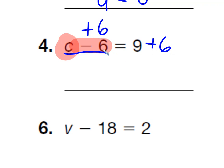So again, if we have take away 6 and plus 6, what does that do? It cancels it out. So now all we have left is the C. And I'll just move that down here. And on the right side, 9 plus 6, well that equals 15. And by checking it, we just say 15 take away 6. Does that equal 9? Yes, it does. So there we go.